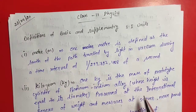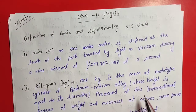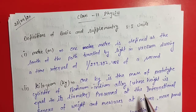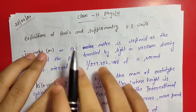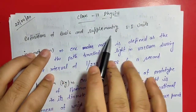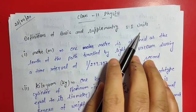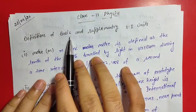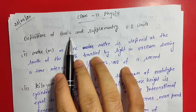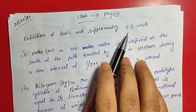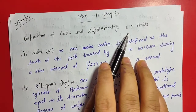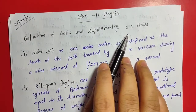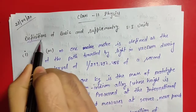Hello students, I hope all of you are fine. Today we are going to discuss the definition of basic and supplementary SI units. We know that there are seven basic units, or we can say seven fundamental units, and two supplementary units. In this lecture we will discuss the definitions of basic units and supplementary units.